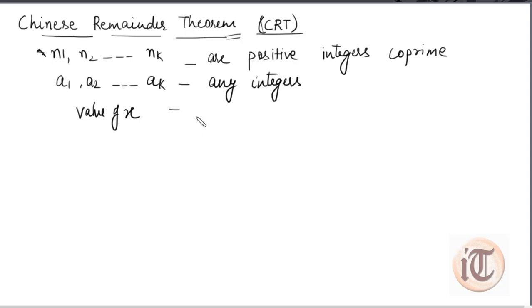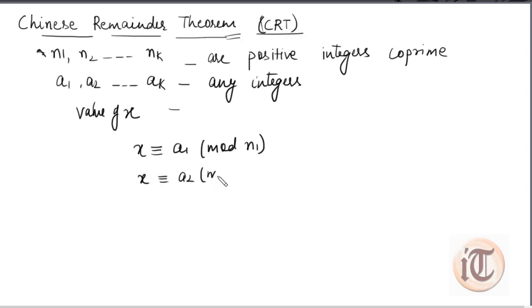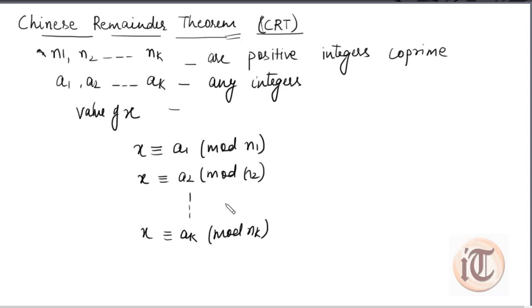What are the congruence equations? If we have x congruent to a1 mod n1, x congruent to a2 mod n2, up to x congruent to a of k mod n of k — if we have these types of congruence relationships, then with the help of the Chinese Remainder Theorem, we can calculate the value of x. This is the application of the Chinese Remainder Theorem.